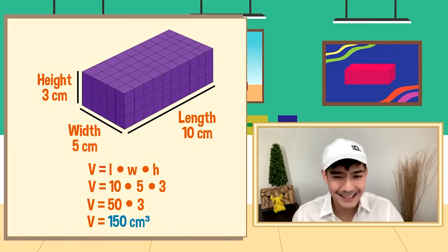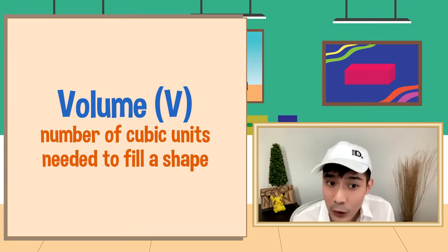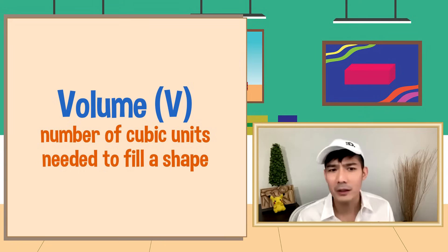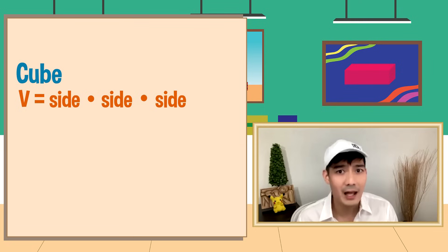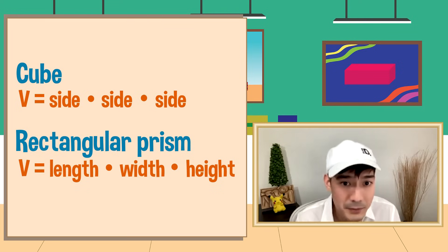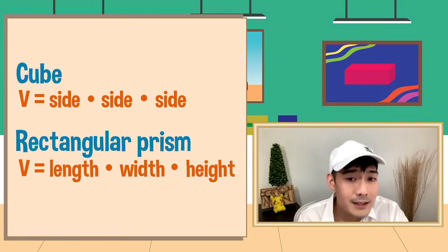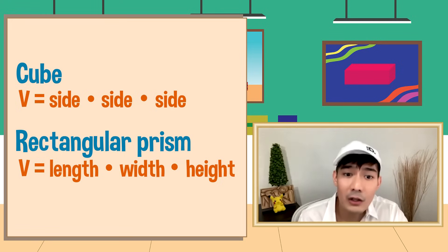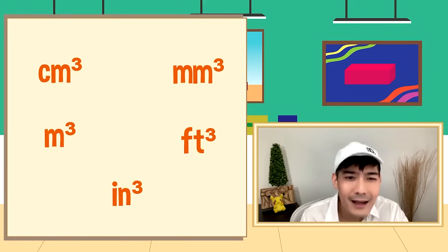Math Dali! Para sa cube, V is equal to side times side times side. Then we use the formula V is equal to length times width times height kapag inabot naman natin ang volume ng rectangular prism. At dagdag kaalaman — maliban sa cubic centimeter, ang mga units na cubic meter, cubic millimeter, cubic feet, cubic inch ay ilan pa sa mga units na ginagamit natin sa volume.